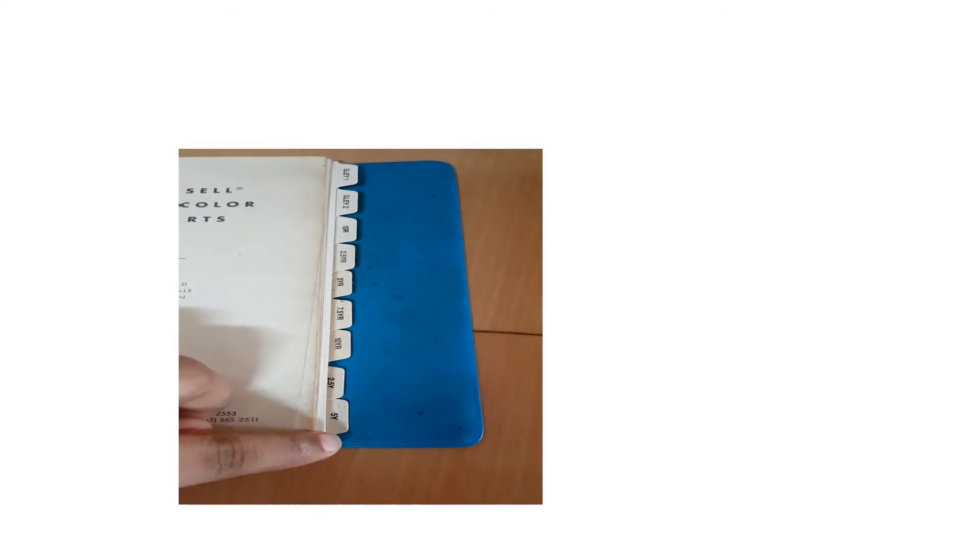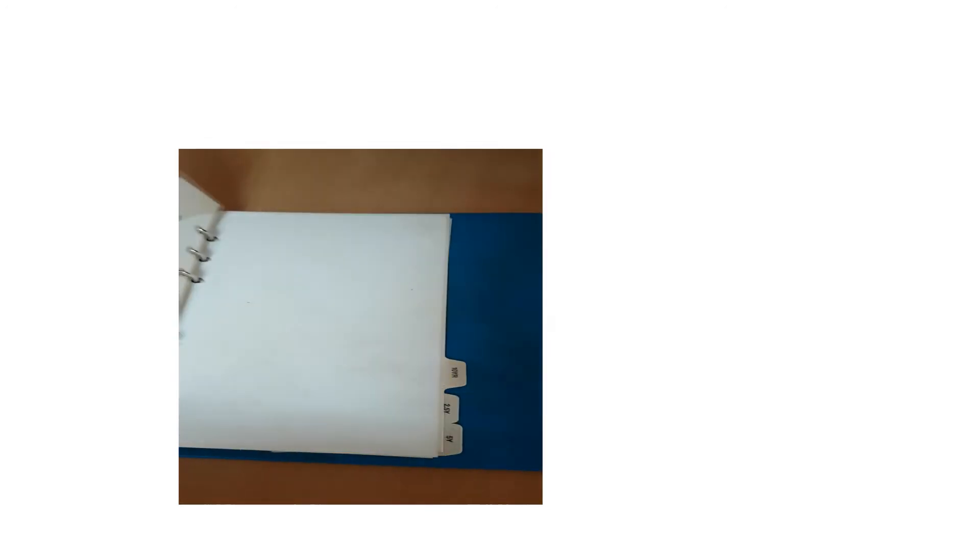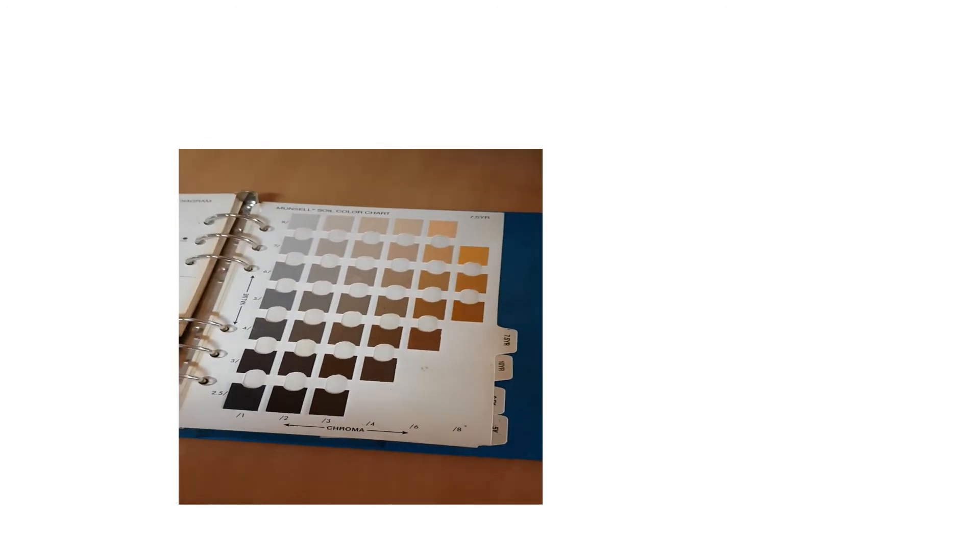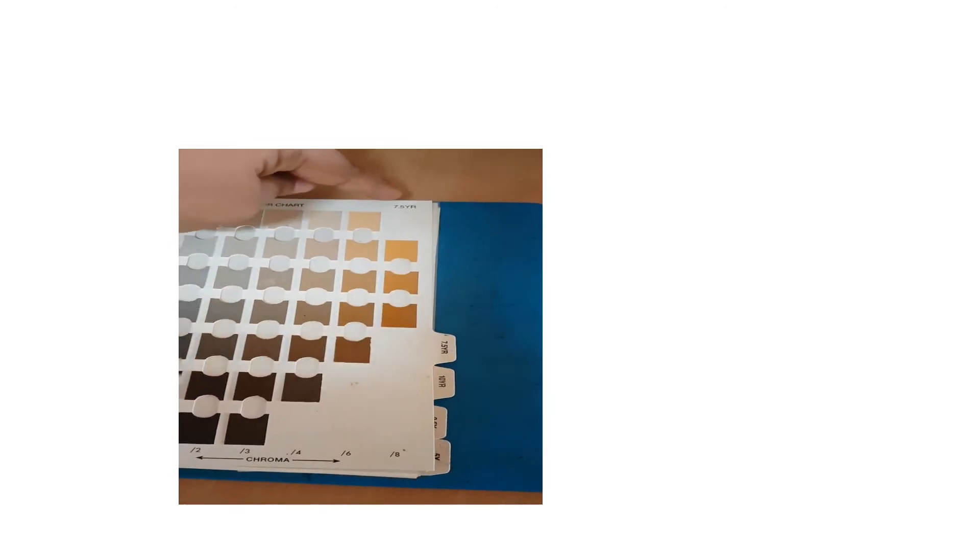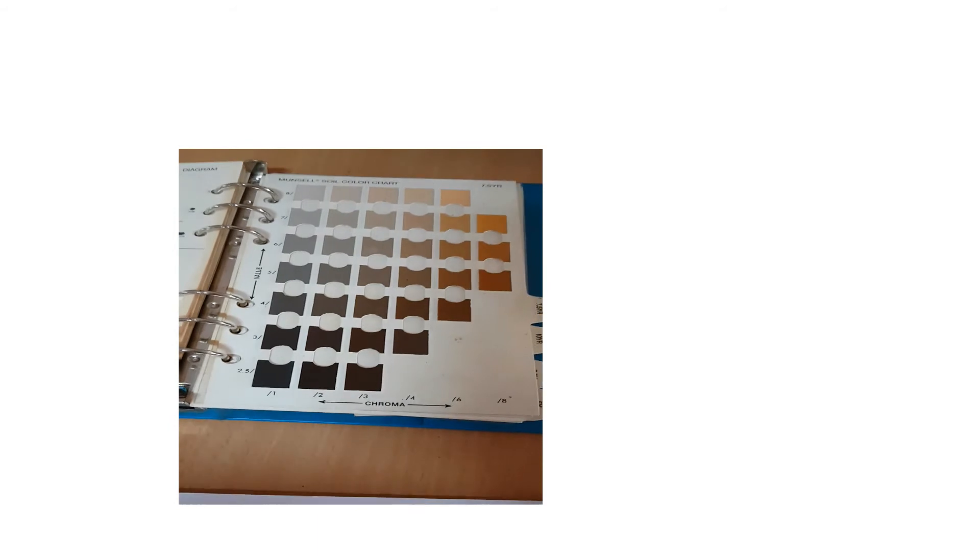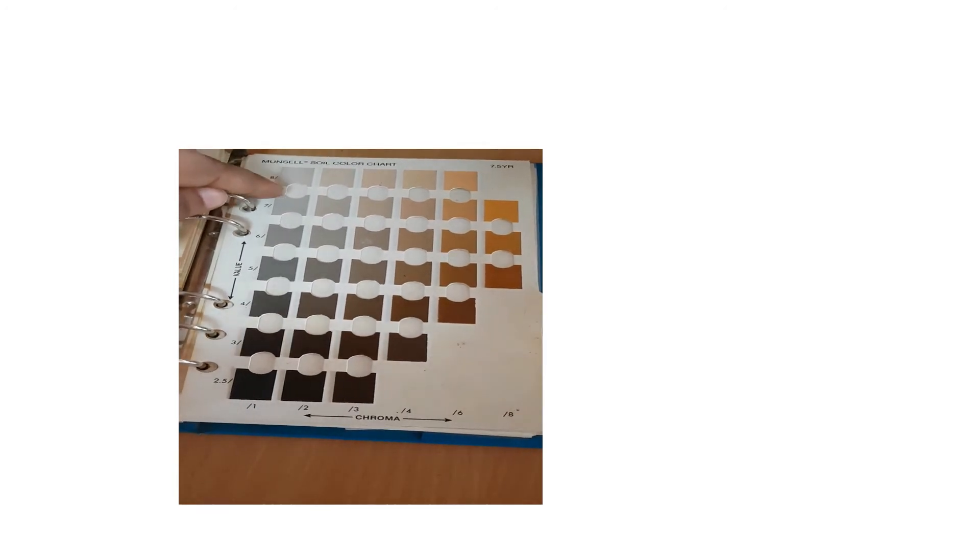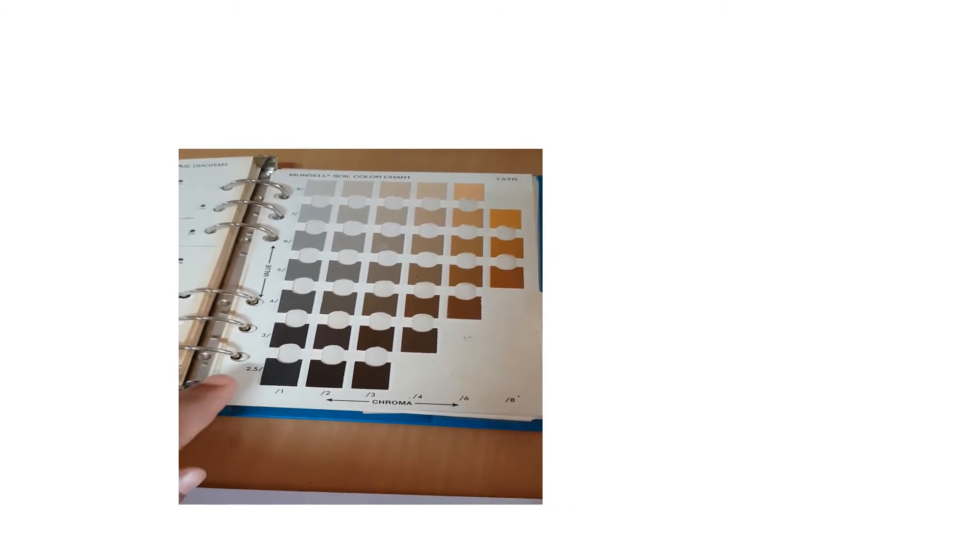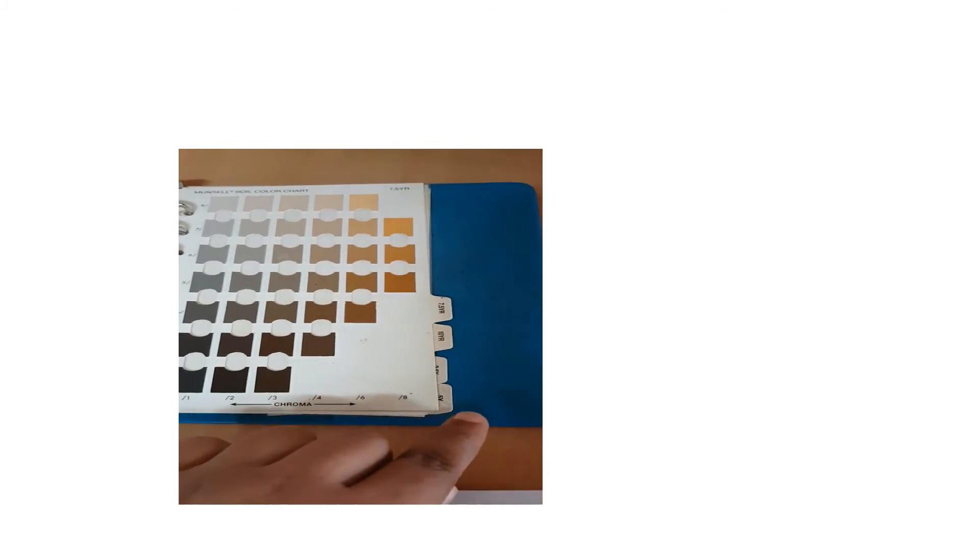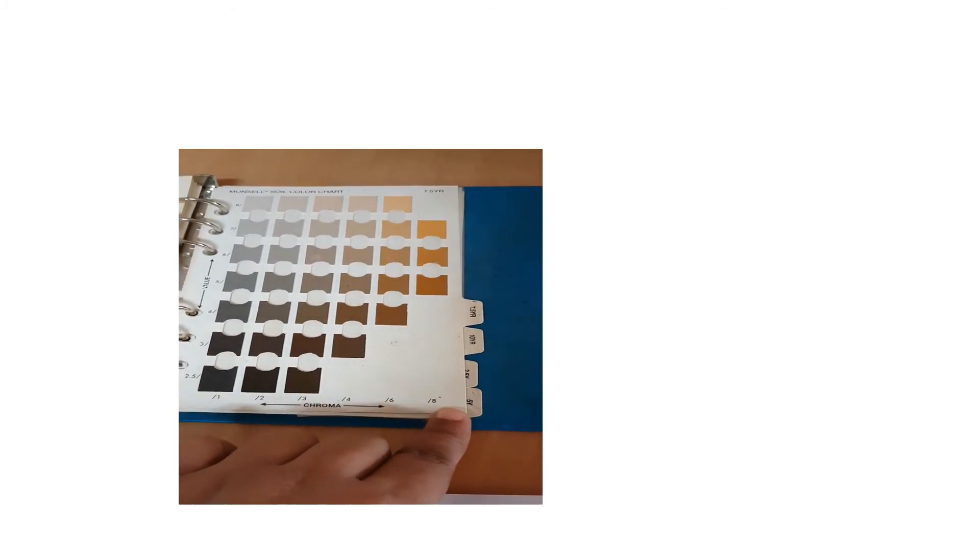So in this Munsell color chart, we have different hue values. As I mentioned before, we have red, yellow, and then in-between colors like 10YR. And then in this column, we have the value we read from bottom to top. And then at the bottom, we have chroma values we read from left to right. And at the top of the paper, we have the hue value. We can select the page and then we can read the value from the left hand side, from bottom to top. And we can read the chroma at the bottom from left to right.